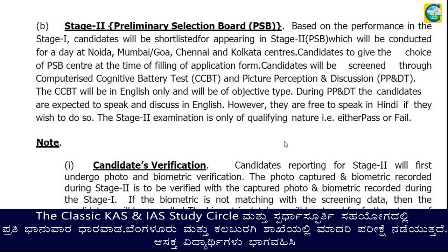During the Preliminary Selection Board exam, you will appear at one of the five centers: Noida, Mumbai, Goa, Chennai, or Kolkata. In one day, you will complete two examinations: the Cognitive Battery Test (objective type) and the Picture Perception and Discussion Test. In the PP&DT, candidates are expected to speak and discuss in English; however, they are free to speak in Hindi if they wish to.